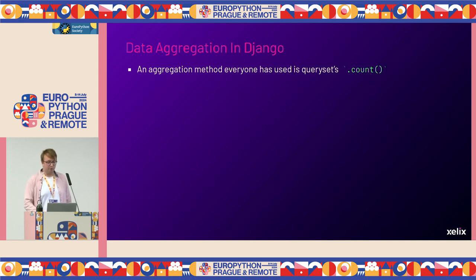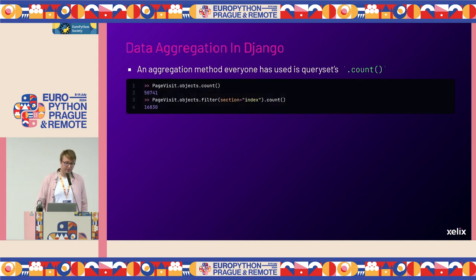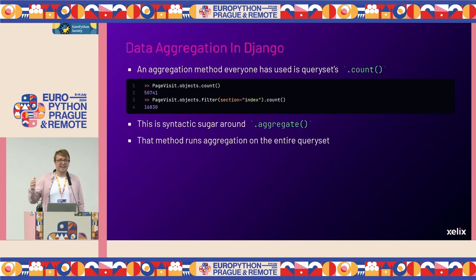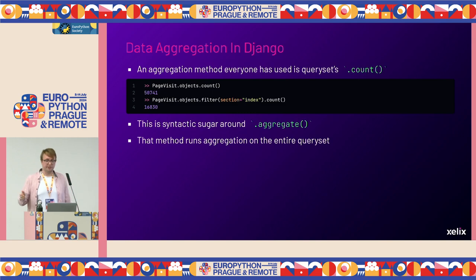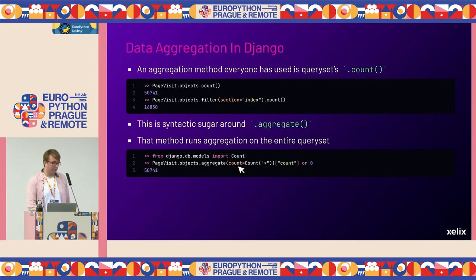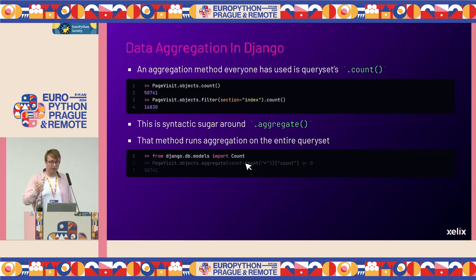Coming back to the count method: you can run PageVisit.objects.count() and that will return the number of objects in that table. It works on the query set itself, so if you filter for a specific section, it will return a different count. This is actually syntactic sugar around a method called aggregate — a method on query sets that returns the aggregation on the entire query set. The aggregate method always returns a dictionary, and we can see how count is implemented under the hood: we call aggregate, define a name, and use the Count function from django.db.models.